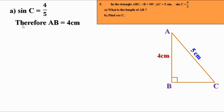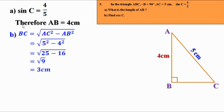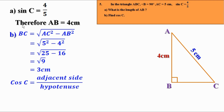Now, let us find the third side BC. BC equals root of AC squared minus AB squared, that is root of 5 squared minus 4 squared. 5 squared is 25 and 4 squared is 16. So, it is root of 25 minus 16, which equals root of 9, and that equals 3. Therefore, BC equals 3 cm. Now, cos C means adjacent side by hypotenuse. The adjacent side of angle C is BC and the hypotenuse is AC. So, cos C equals BC by AC, which is 3 by 5.